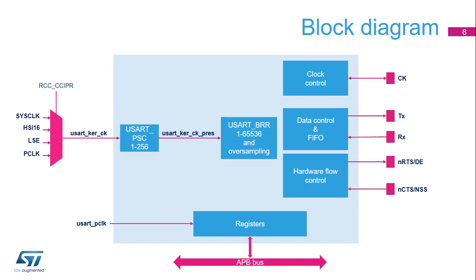TX and RX pins are used for data transmission and reception. NCTS and NRTS pins are used for RS-232 hardware flow control. The Driver Enable pin (DE), which is available on the same I/O as NRTS, is used in RS-485 mode. The clock output (CK) is dual-purpose: when the USART is used in synchronous master-slave mode, the clock provided to the slave device is output on the CK pin; when used in smart card mode, the clock is also output on the CK pin. Note that the NSS and NCTS signals share the same pin.